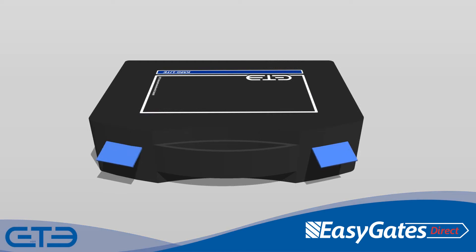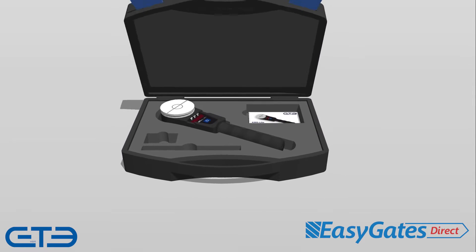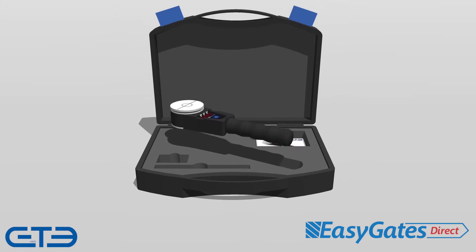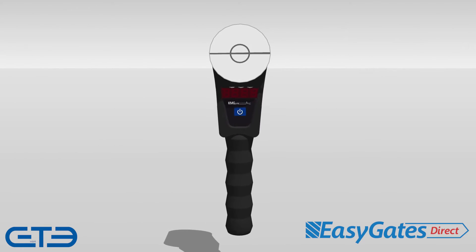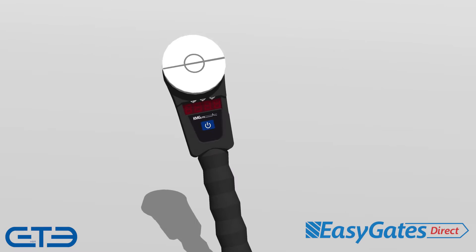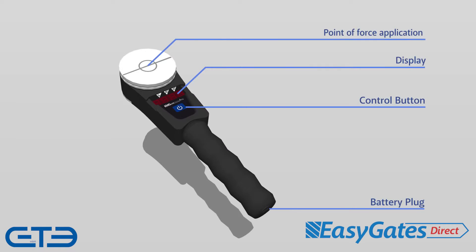In this part of the tutorial we will learn about the system and functions of the KMG Light, from the basics up to extrapolating your data from the tool. Looking at the device from a distance, we have four main points of interest: the point of force application, where kinetic energy is transferred to the device to be converted into data; the display, where data is shown in newtons and time measurements; the control button, which controls the power and is used for scrolling through results; and the battery plug.